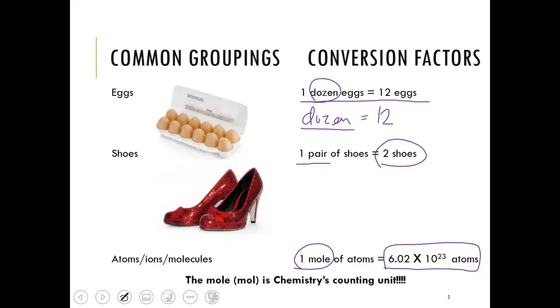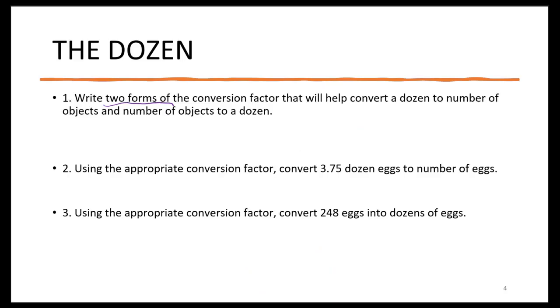Now it could be atoms, it could be ions, it could be molecules, it could be particles. It's still a method of counting how many we have. So the mole, or the abbreviated MOL in chemistry, is chemistry's counting unit.